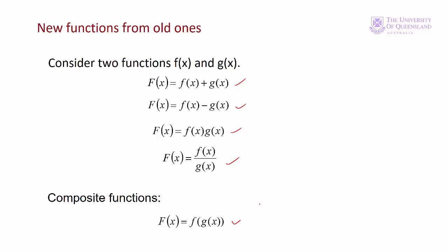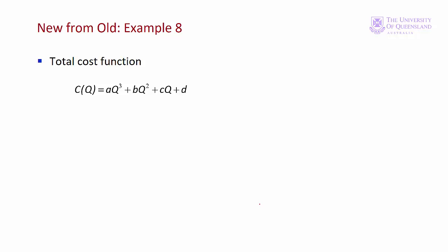Let's consider some common economic examples. We can start with a cost function — the relationship between a firm's level of output and its cost of production. A cubic function is very useful for modelling cost functions. If we have particular values for our coefficients a, b, c and d, then a cubic cost function has some characteristics that capture aspects of real world behaviour. You'll learn a lot more about a firm's cost function in microeconomics.